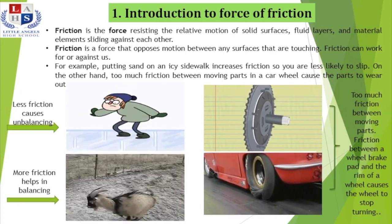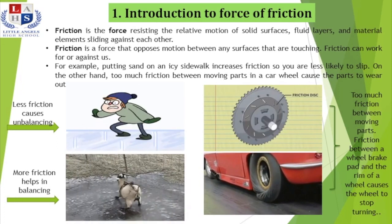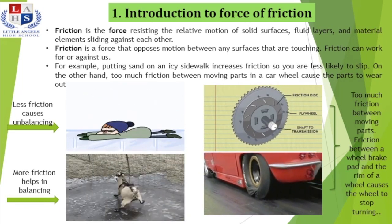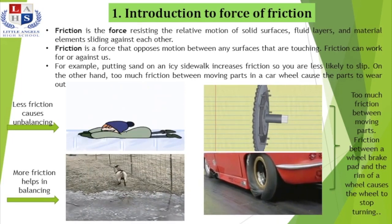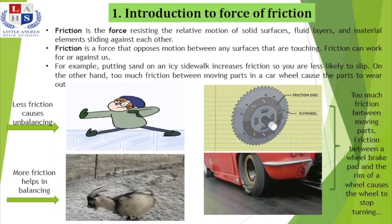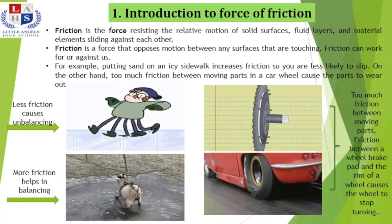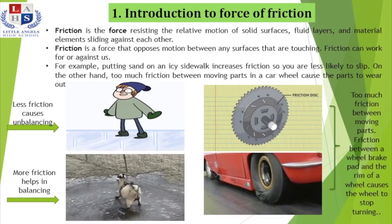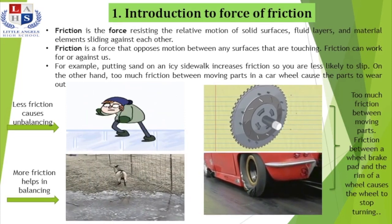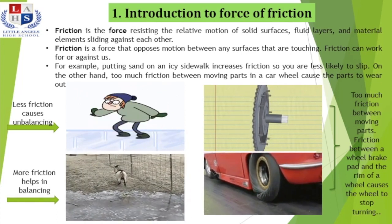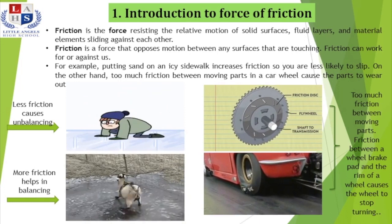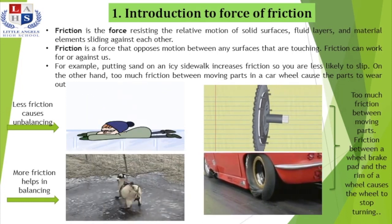In the first animated image, the boy is unable to walk on an icy sidewalk due to the smoothness of the surface — less friction causes unbalancing. In the second animated image, the goat first slips on an icy surface but gets its balance on a rough surface, implying more friction helps in balancing. This is how friction sometimes works in favor of us and sometimes against us. The adjacent animated images show how too much friction can cause problems: too much friction between the moving parts of a wheel causes the brake pad and rim to stop the wheel from turning or even wear it out.